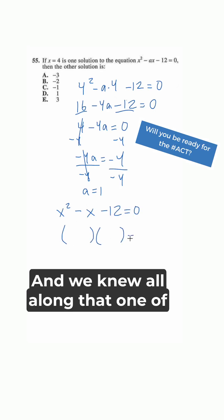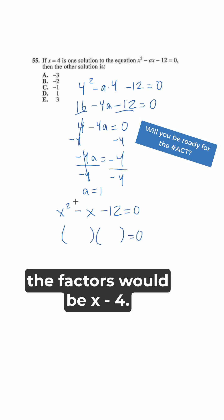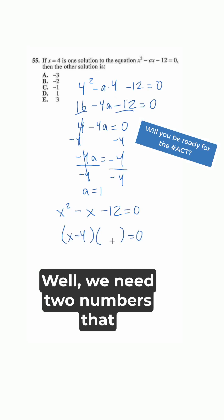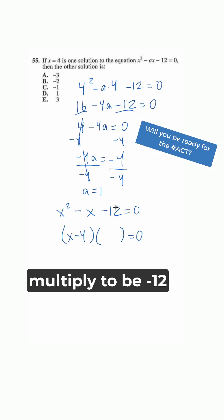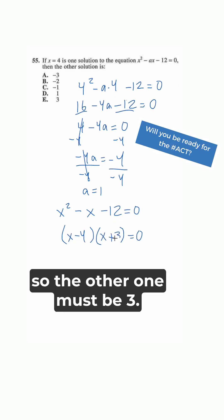And we knew all along that one of the factors would be x minus 4, and what would the other one be? Well, we need two numbers that multiply to be negative 12, and one of them is negative 4, so the other one must be positive 3.